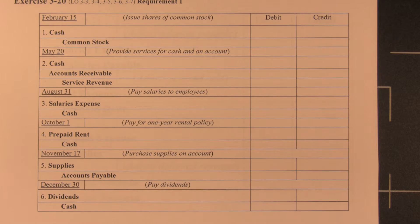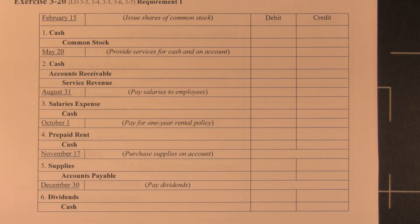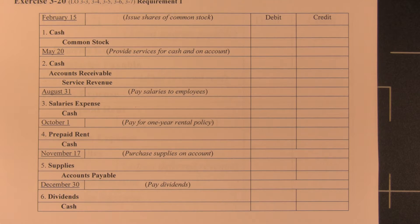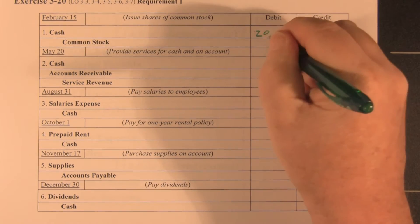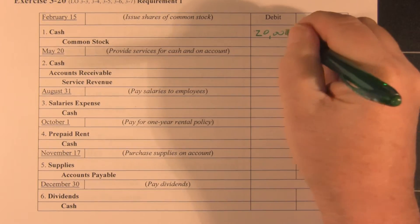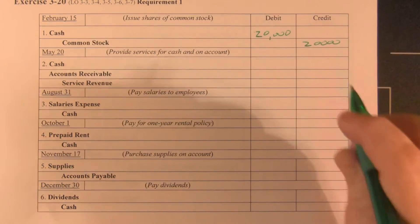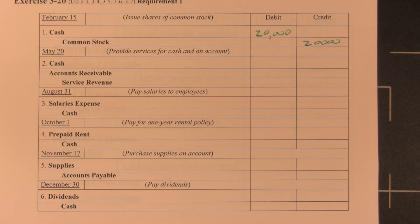Exercise 320 is a five-part problem that takes us through the entire accounting cycle, beginning with the journal and ending with the closing entry. We start with the journal: on February 15th, they issued shares of common stock for $20,000 — that's a $20,000 debit to cash and a $20,000 credit to common stock.